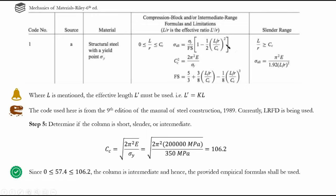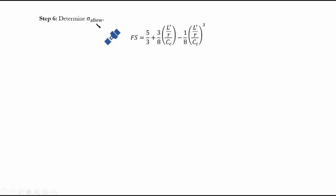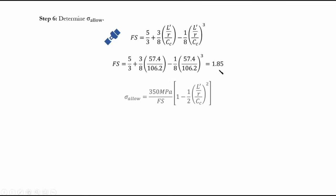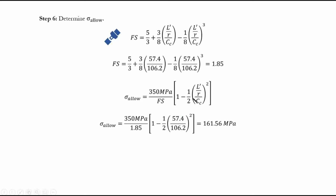To determine sigma allowable, we first find the factor of safety using the code formula, where L'/R is the slenderness 57.4 and CC = 106.2. Following the calculation, we obtain the factor of safety value. The sigma allowable formula gives σ_allowable = σy / (factor of safety), with all terms plugged in. The result is σ_allowable = 161.56 MPa — this value will be used in both the allowable stress and interaction method formulas.